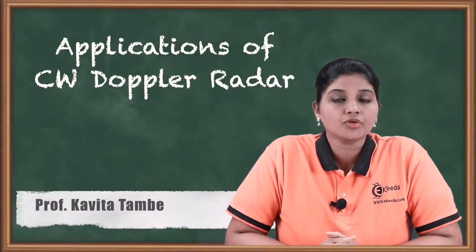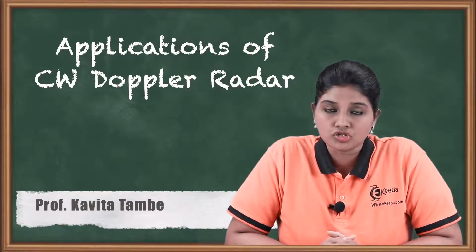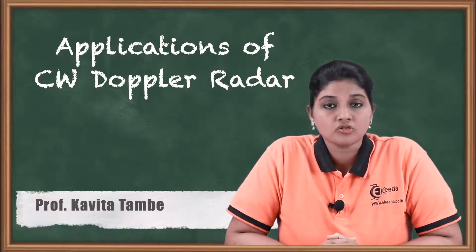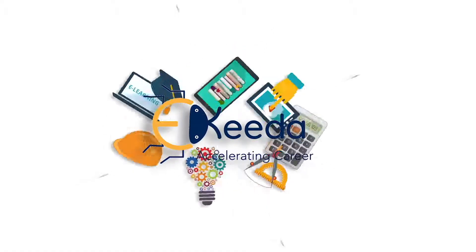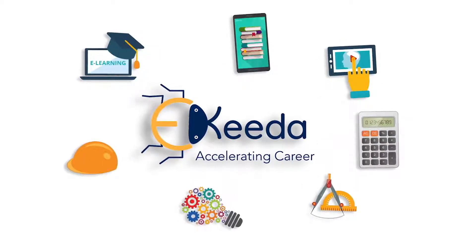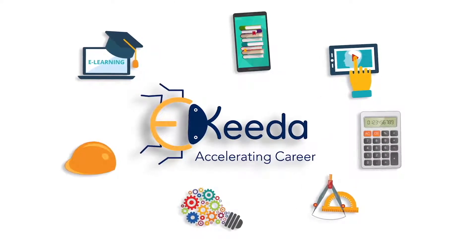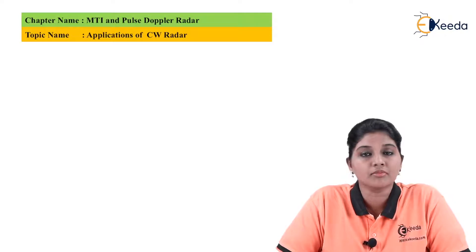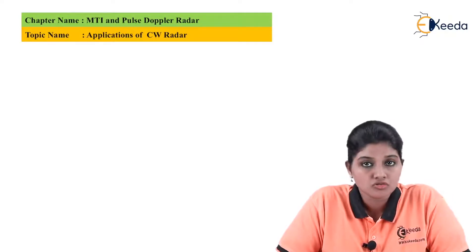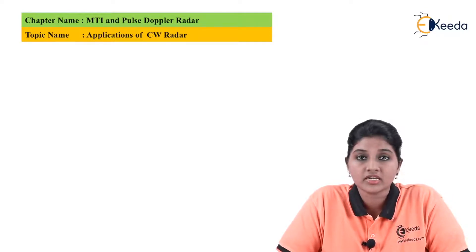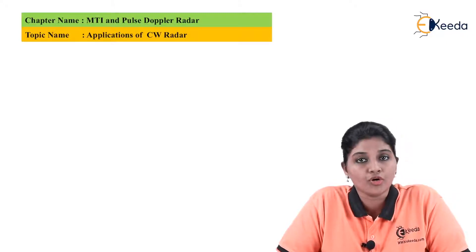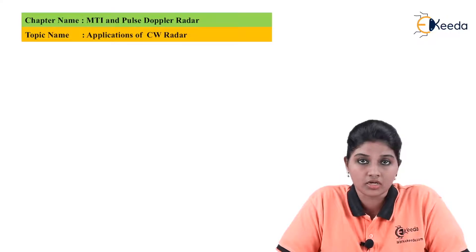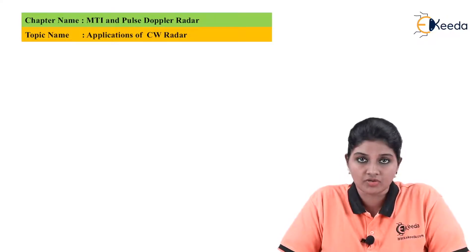Hello friends, in this video we are going to find out some basic applications of continuous wave radar. The continuous wave radar has many applications and it is also used for detecting the range and detecting the location of the object. The continuous wave radar with certain modifications can also be used to find out the range of the target. So now let's find out some areas of application of continuous wave radar.